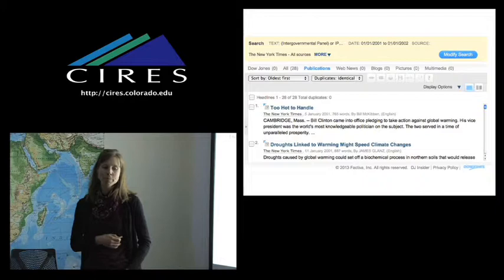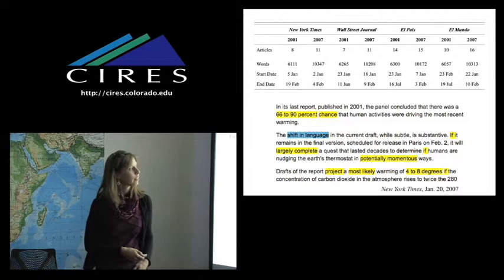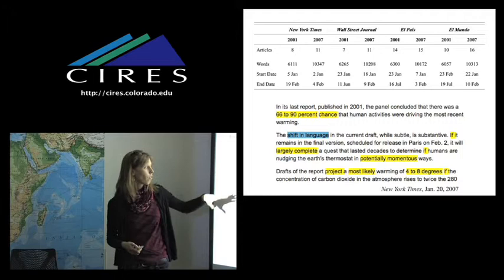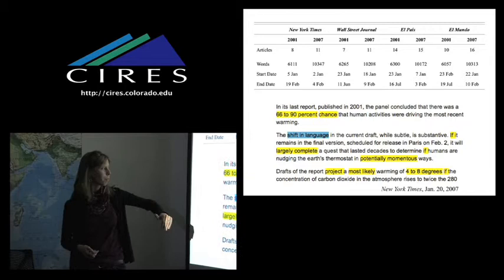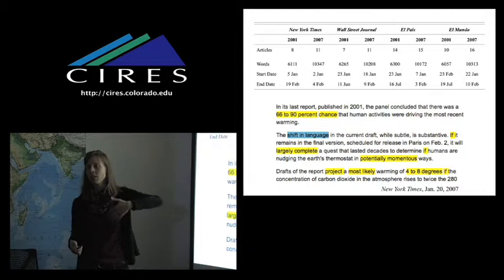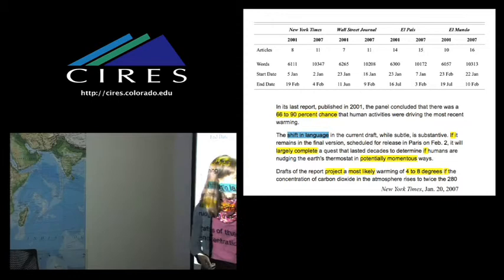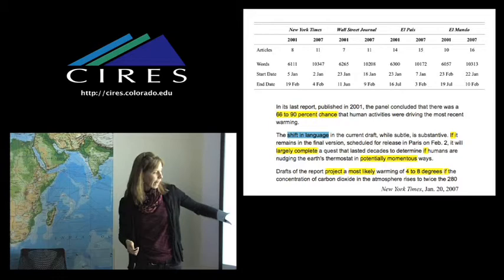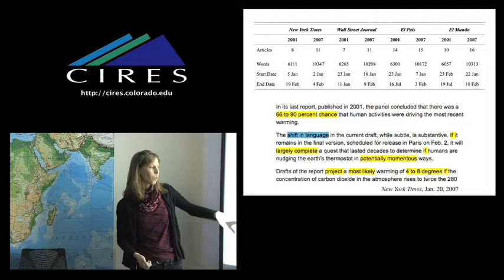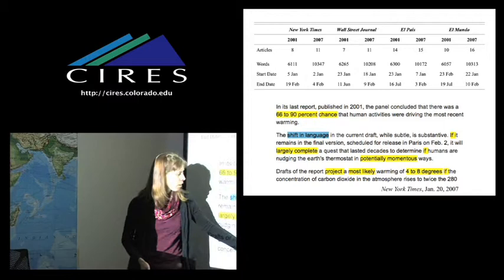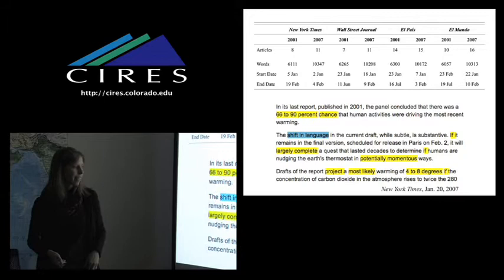And what we did is we would go through the news articles, and then we would mark each phrase or word that we felt conveyed some sort of uncertainty. So here you have a numeric range being presented, the word chance, which suggests that there's a possibility. Here, highlighting blue, it's talking about a shift in language in the report, so that notion of contradiction, what is the eventual report going to say? We have a lot of if clauses, which tell us, well, this will happen, but only depending on this contingency. We have qualifying adverbs, like largely. In other words, the goal is to really understand the science. Well, we will largely get there, but not entirely. Things that are potential, things that are likely, verbs like project, predict, estimate, and there are many more.